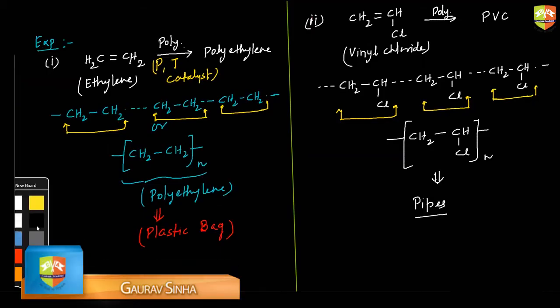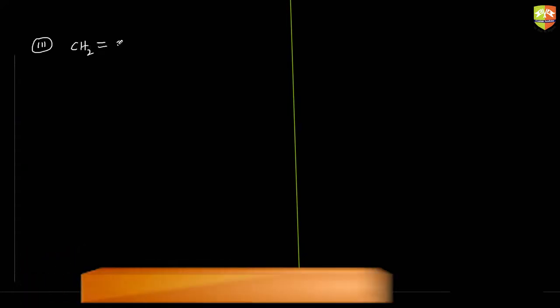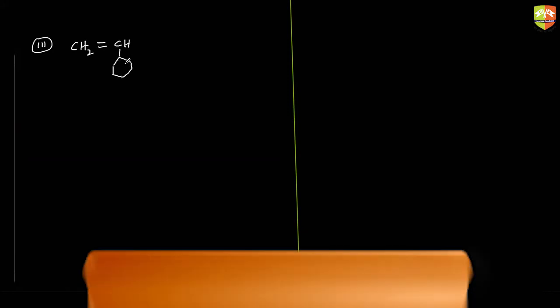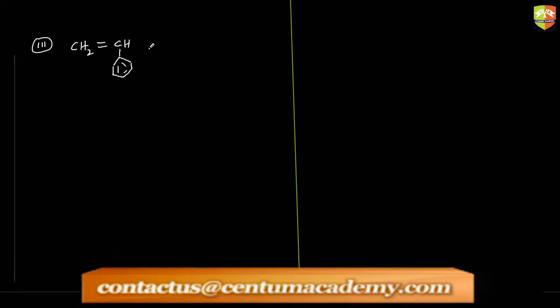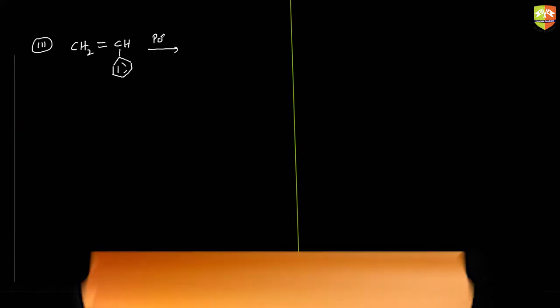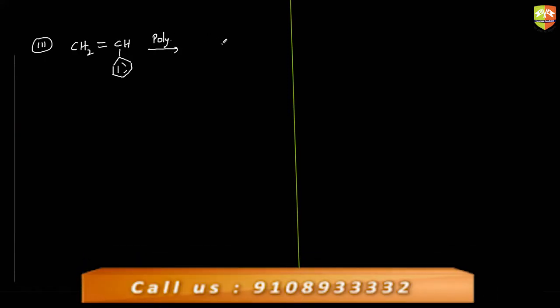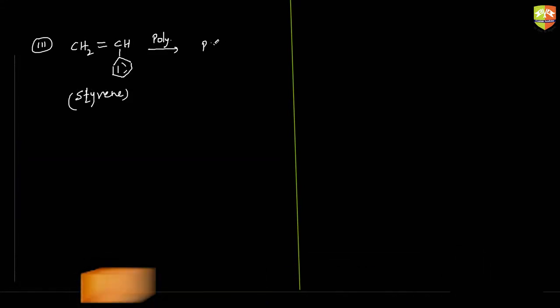Third type: if I remove the chlorine and add a phenyl group, we get a CH2 double bond CH with a benzene ring — the main ring. The name of this compound is styrene, and the polymerization of this gives polystyrene.